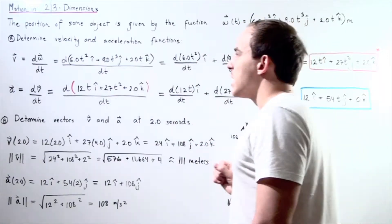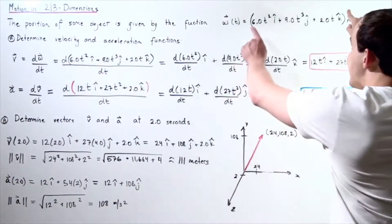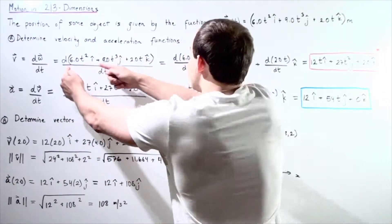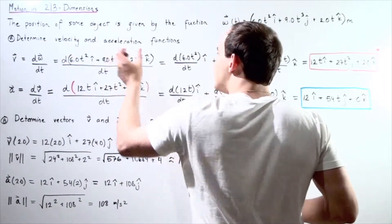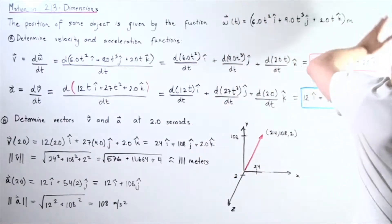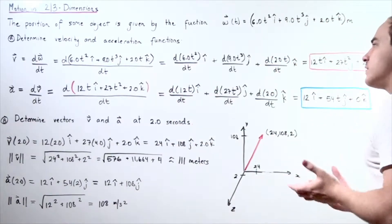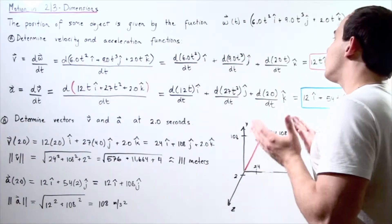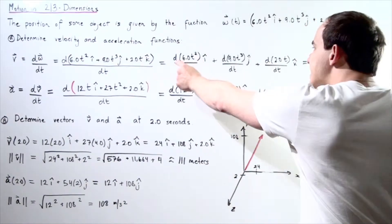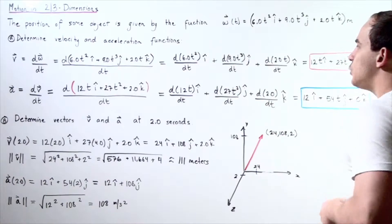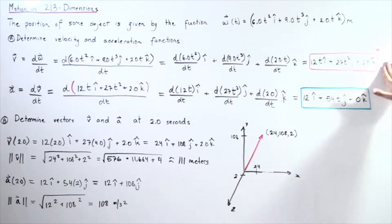Let's do exactly that. My instantaneous velocity vector equals the derivative of the displacement function W. I distribute this derivative to each component — the x, y, and z components — because this vector is in 3 dimensions. Taking the derivative of the x component: derivative of 6t squared is 12t. Derivative of the y component: derivative of 9t cubed is 27t squared. Derivative of the z component: derivative of 2t is simply 2. So, my velocity function is 12t i-hat plus 27t squared j-hat plus 2 k-hat.